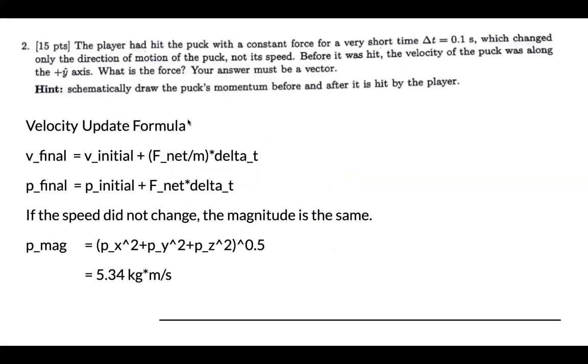This is the second question. The player has hit the puck with a constant force for a short time. Delta t is equal to 0.1. We change only the direction and not the speed. If the speed did not change, the magnitude will be the same.